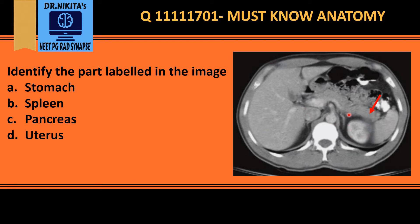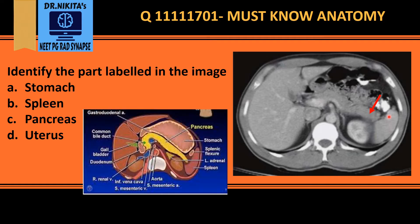This is a contrast-enhanced CT scan of the abdomen. The labeled structure is the pancreas. Looking at the schematic diagram, the pancreas consists of the pancreatic head, body, and tail. We know that the pancreatic tail is in relation to the spleen.